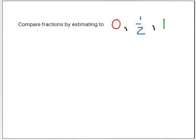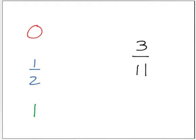We're going to compare fractions by estimating whether the fraction is closest to 0, half, or 1, which is a whole. Take for example the fraction 3 elevenths. I need to decide if that's nothing, half of something, or 1. I start by looking at my denominator here. My denominator is 11. Now half of 11, or 11 divided by 2, would be 5.5. Now 3 is less than 5.5, so I know my fraction is less than half, so I'm going to put it in this category.